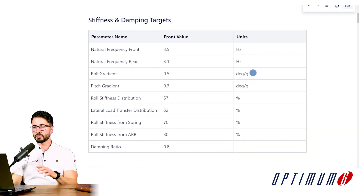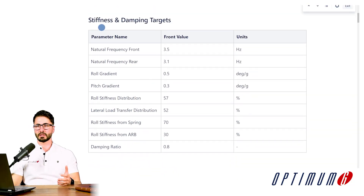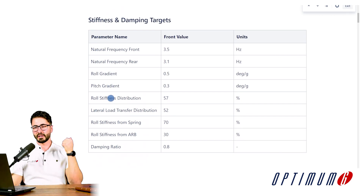So how do we start defining and designing the stiffness and damping characteristics of our car? As we've discussed in the previous episodes, we start by defining the outputs that we would like to achieve. In this documentation page we have defined many of the characteristics we would like to achieve, such as natural frequencies, roll gradient, pitch gradient, roll stiffness distribution, and so on.